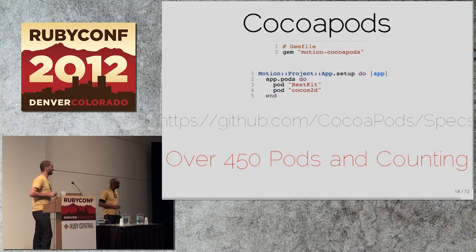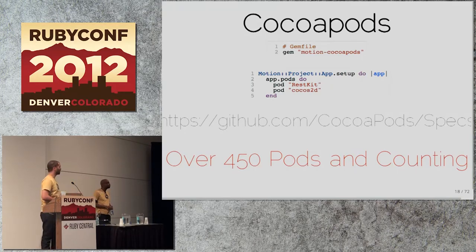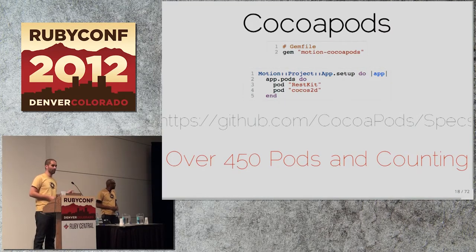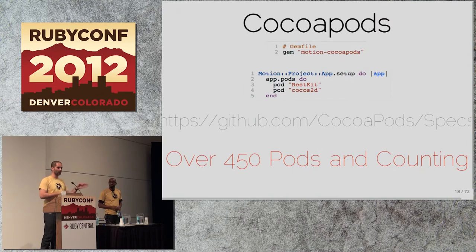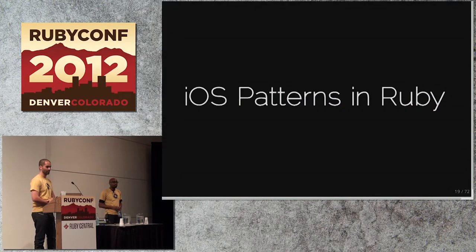CocoaPods is sort of like a RubyGems system for Objective-C development. You bootstrap from RubyGems into CocoaPods and then define pods like RestKit or Cocos2D. There are around 450–600 pods available. It used to be the case that you'd have to download Objective-C library code and dynamically link it into your app yourself — CocoaPods takes care of all that, including dependency management.